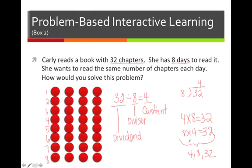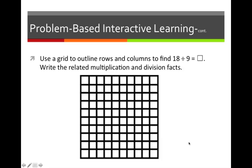Let's try another. Use a grid to outline rows and columns to find 18 divided by 9. Write the related multiplication and division facts. So I'm going to choose to just number first, 1, 2, 3, 4, 5, 6, 7, 8, 9, because I'm dividing by 9. So I'm going to have 9 rows. 9, 10, 11, 12, 13, 14, 15, 16, 17, 18.